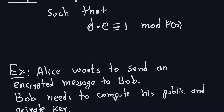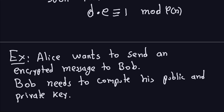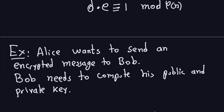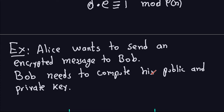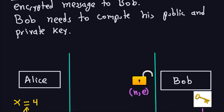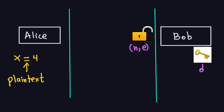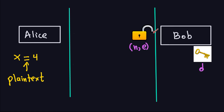Let's look at an example. Alice wants to send an encrypted message to Bob — that's always the case in our examples. Bob needs to compute his public and private key, and make the public key available. The private key is only for Bob. Let's say Alice wants to send the message x = 4.